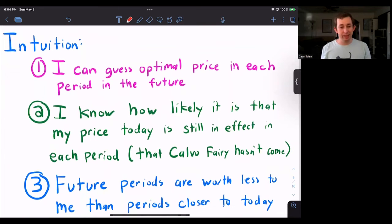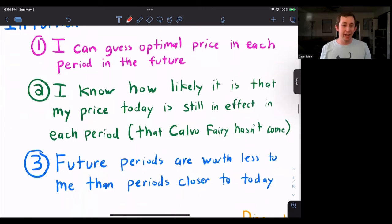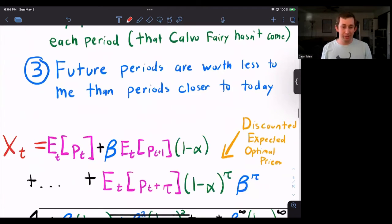And I also have a time discount factor where I discount the future. So the future periods are worth less to me today.